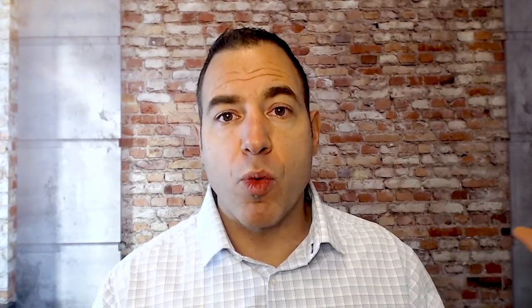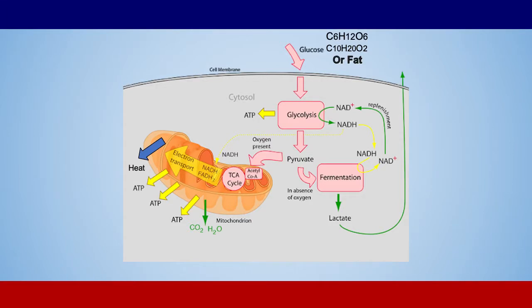And then we get NAD to enter into the mitochondria. For the most part, we're going through a redox reaction — reduction and oxidation — and we're going to oxidize that fuel to create power, which in our cells is called ATP. We're going to get heat generated as a result of this process, and then we're going to have waste products: water and carbon dioxide, just like that engine.